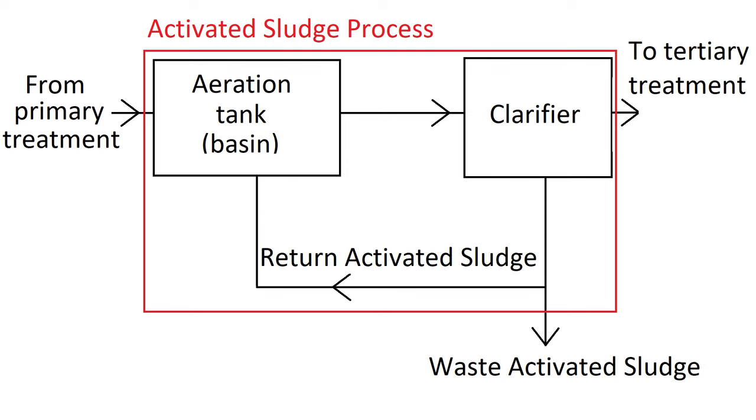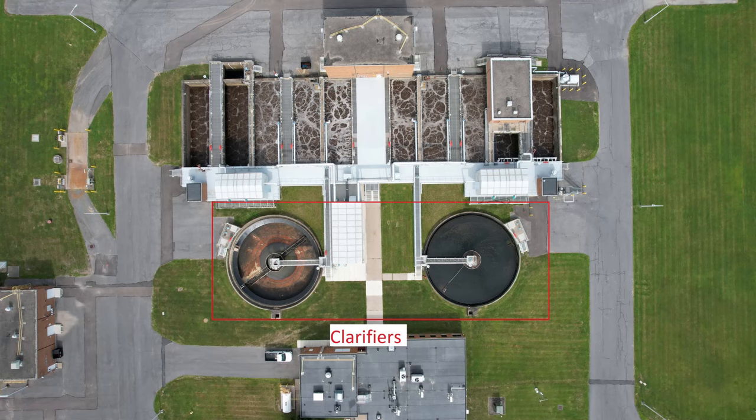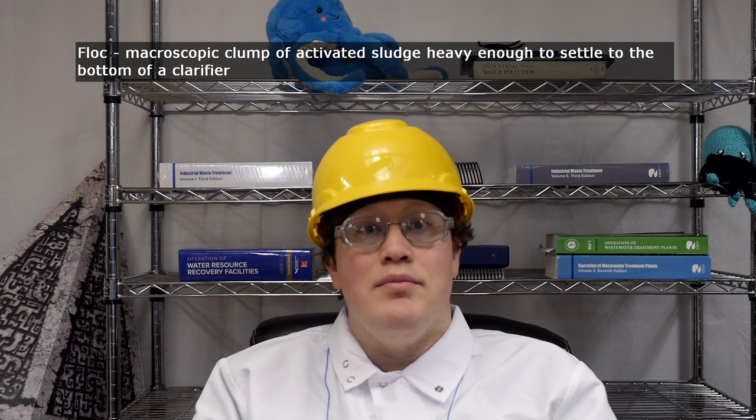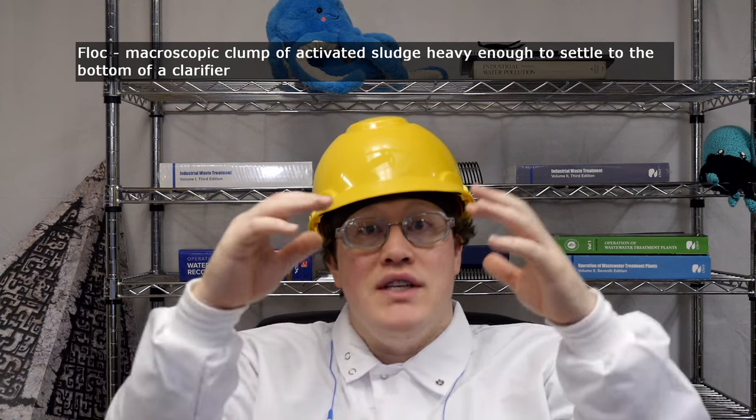After the aeration tank, the mixed liquor is pumped to another tank called the clarifier. There's no air or mixing in this tank because its purpose is to separate the activated sludge out of the water — and the way that's done is to do, well, nothing. If you have the right bacteria active in your sludge, they will glom together into macroscopic clumps called flocs in a process called flocculation. These flocs are heavy enough to sink to the bottom of the tank if the water is still, leaving a clear layer on top — from which the clarifier gets its name. The clear water gets pumped out and on to the next phase of treatment, usually some form of disinfection before it gets discharged to the receiving waters.